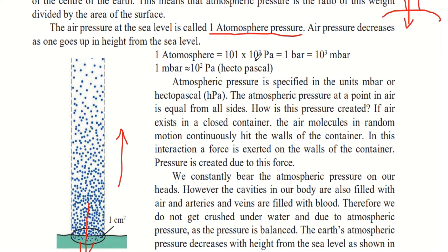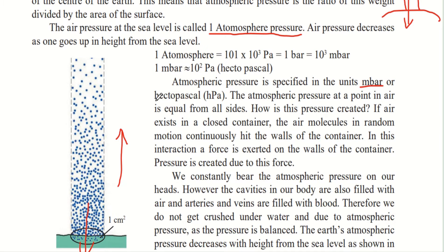The most commonly used unit is Hectopascal. 1 millibar is approximately equal to 10² Pascal, or in other words, 101 Pascal gives you 1 millibar. Atmospheric pressure is specified in units of millibar or Hectopascal, though Atmosphere, Pascal, and Bar can also be used.